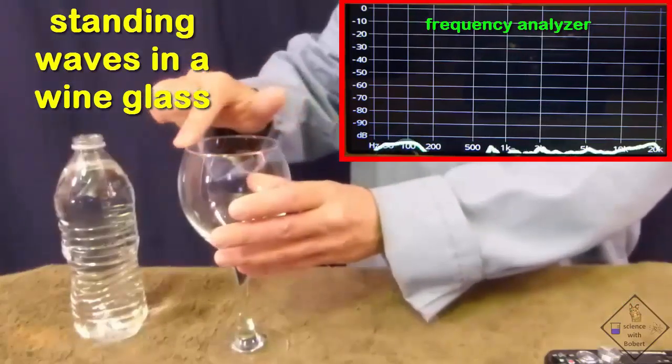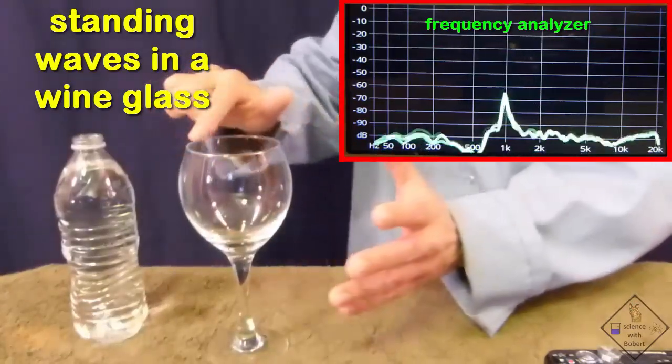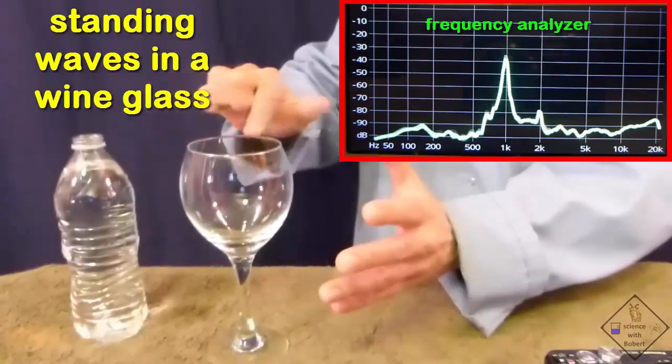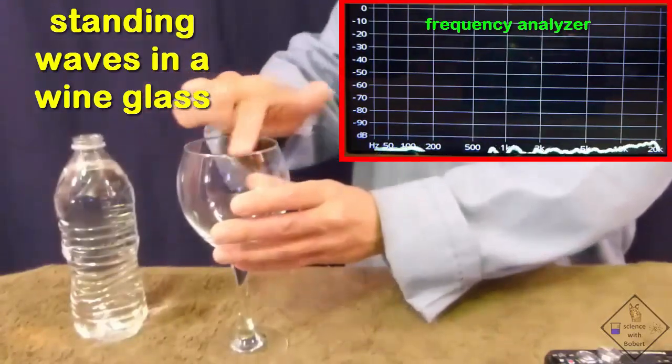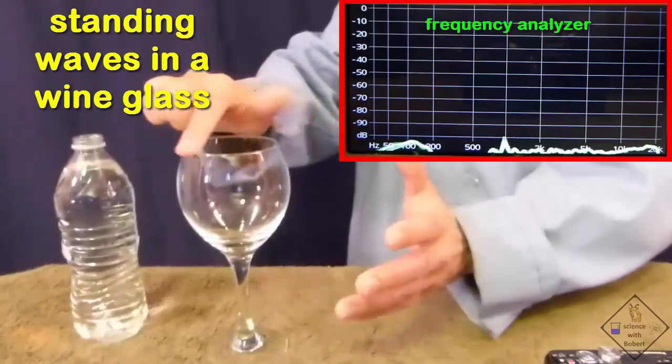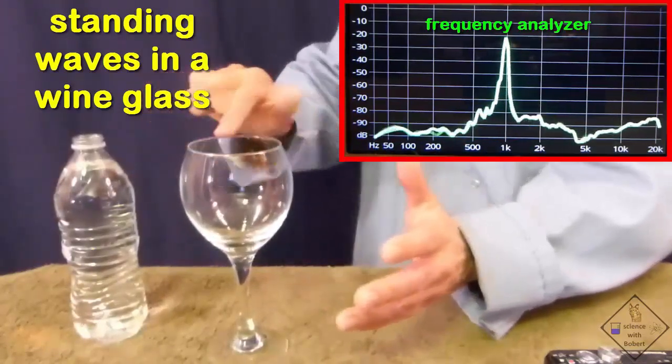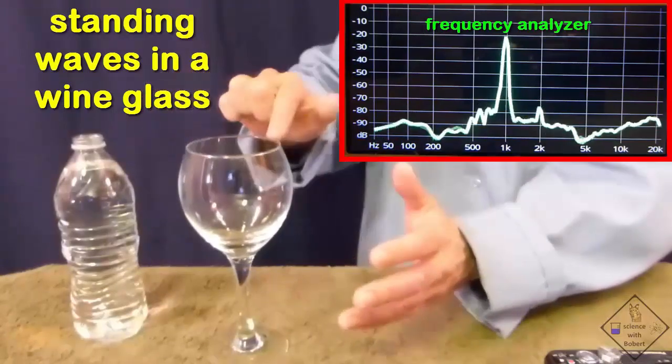Remember, standing waves are actual physical oscillations in the object, so Dr. Smith can only hold the glass at a node. If he holds the glass somewhere else, the standing wave will dissipate its energy into his hand, stopping the generated sound.